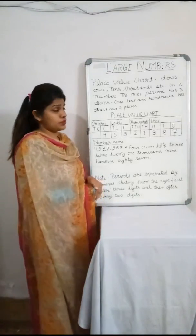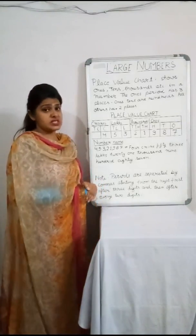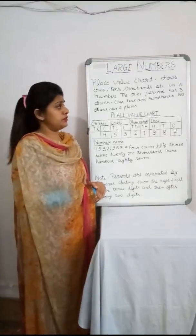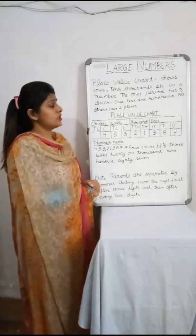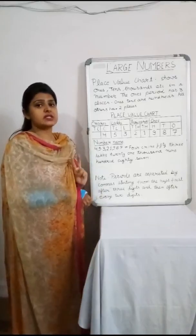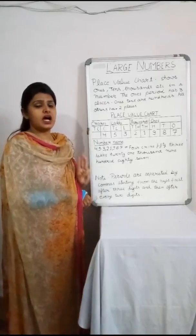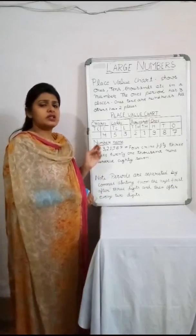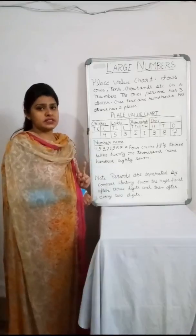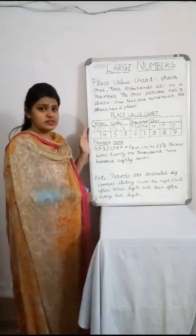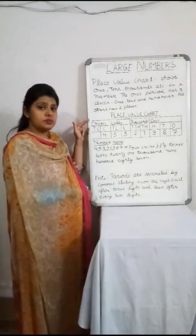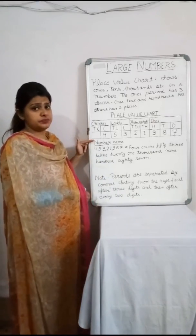The place value chart shows ones, tens, thousands, and so on in a number. The ones field has three places — ones, tens, hundreds — whereas the other fields have only two places. To understand this, we need to look at the place value chart drawn here.